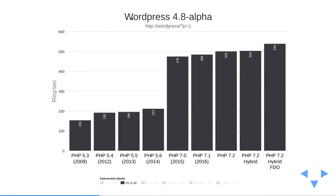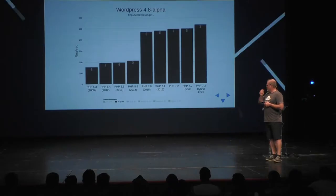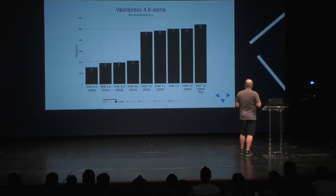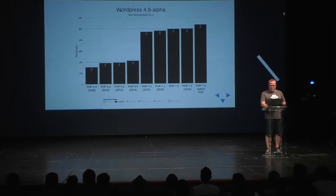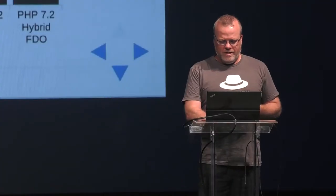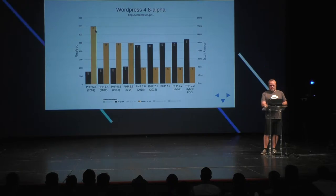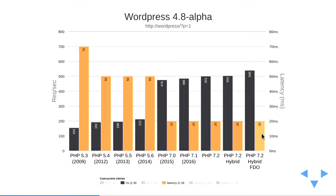Here's the actual effect: hitting a WordPress post page, in PHP 5.3 from 2009 we could get about 150 requests per second. In PHP 7.2 we're up to 540 — basically a 4x increase, which is crazy. And looking at latency on 10 concurrent requests, it dropped from 70 milliseconds down to 20 milliseconds — a massive improvement.